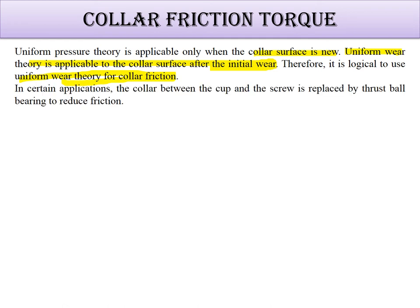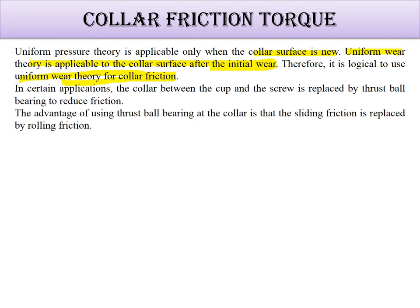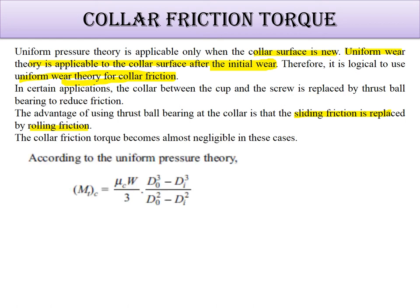In certain applications, the collar between the cup and the screw is replaced by thrust ball bearing to reduce friction. This thrust ball bearing replaces the sliding friction with rolling friction, making the collar friction torque almost negligible.